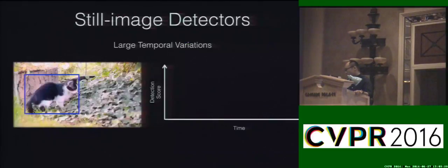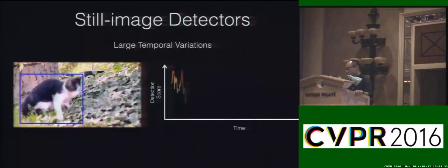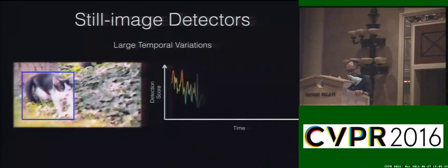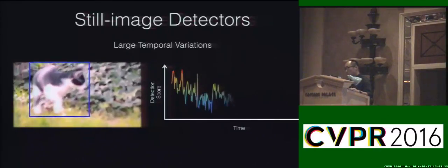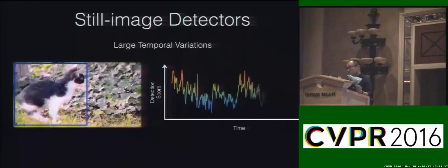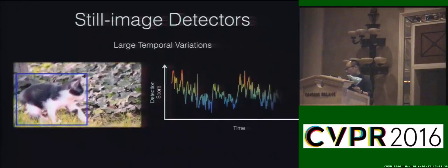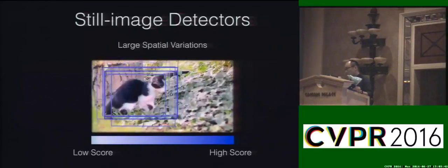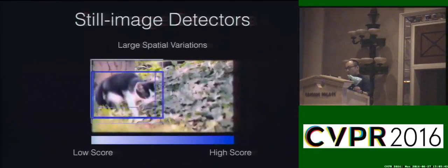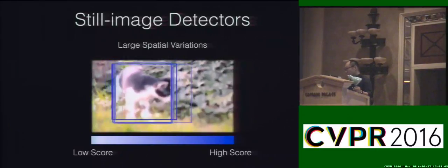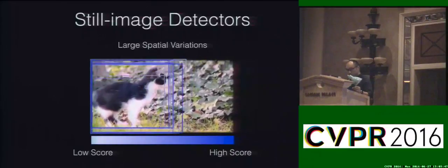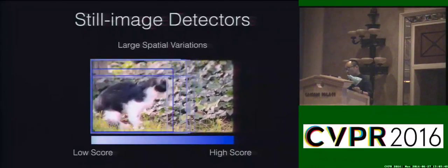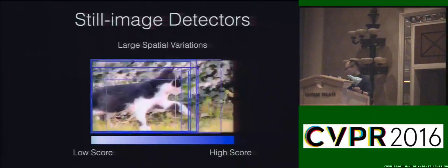If we directly apply still image detectors on the video data, there are usually two problems. The first is that it usually contains large temporal variations, because still image detectors don't have any temporal constraints. The second is it usually contains very large spatial variations — slightly changing the bounding box locations will usually result in large differences in the detection scores.